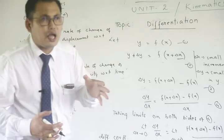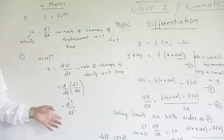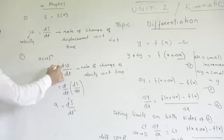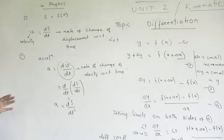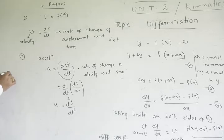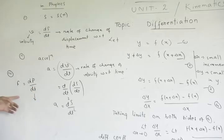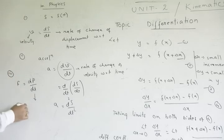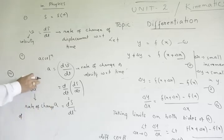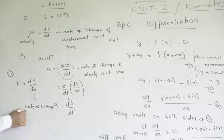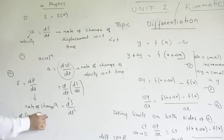The acceleration is nothing but the rate of change of velocity with time. Number three: force. Force equals dp by dt. The force is the same as the rate of change of linear momentum with time — rate of change of linear momentum with time.